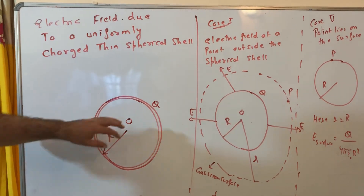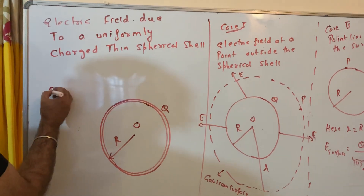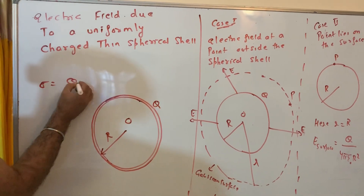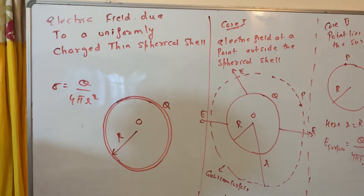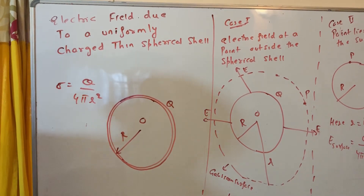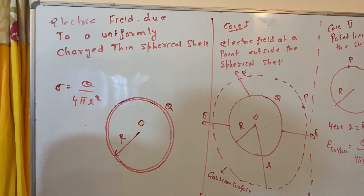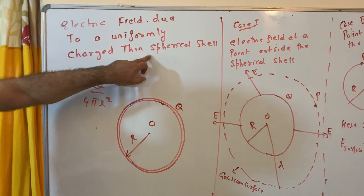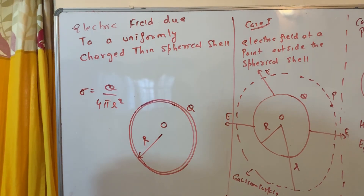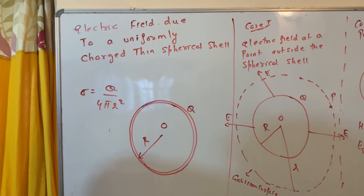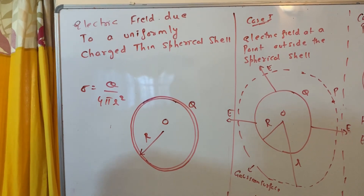Charge is distributed over the surface, so either sigma or q will be given. Sigma equals q divided by 4πr². You can use either depending on what is given. The radius is given as r. You have to find the electric field due to this spherical shell or hollow sphere. There are three cases.